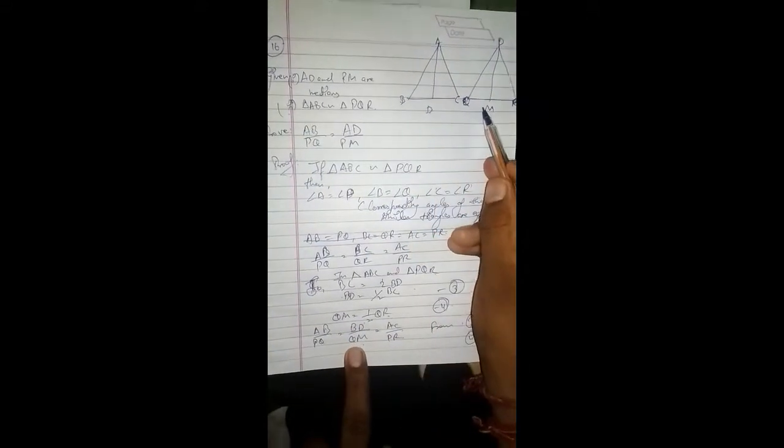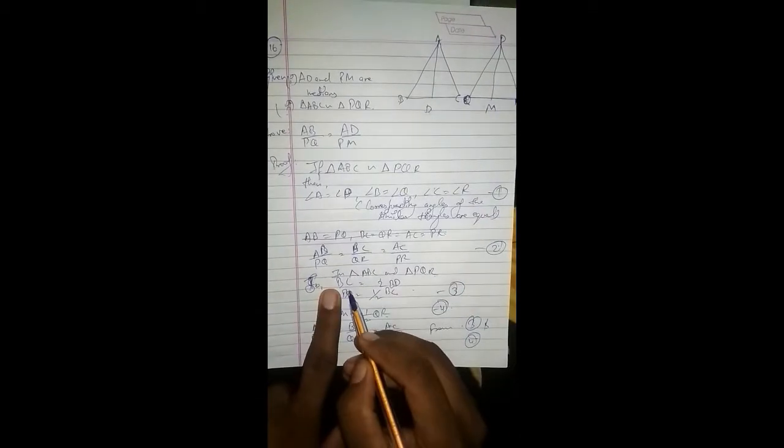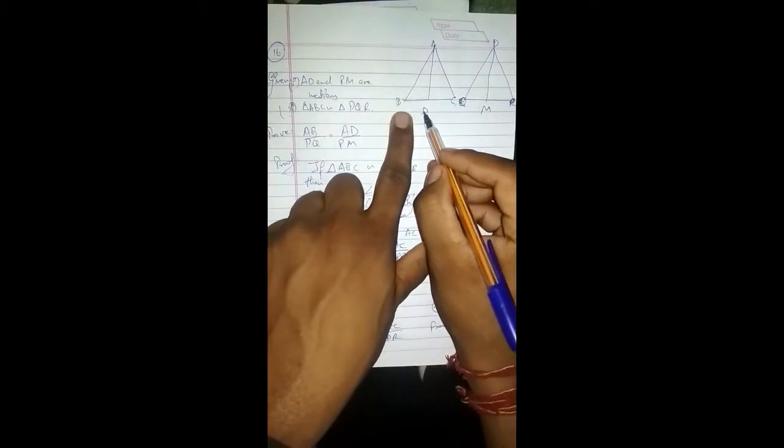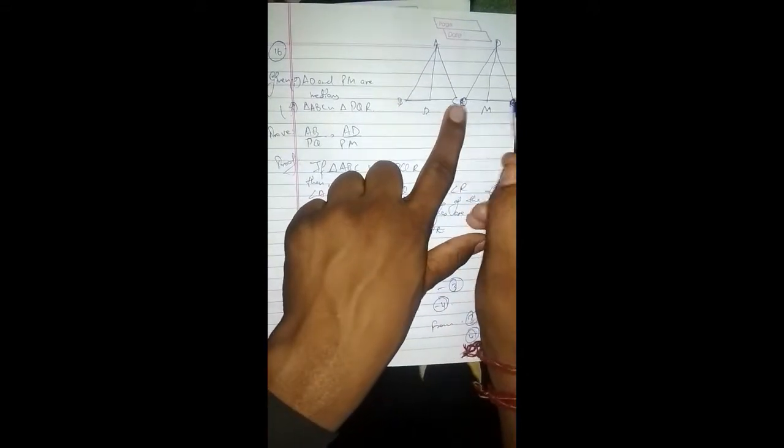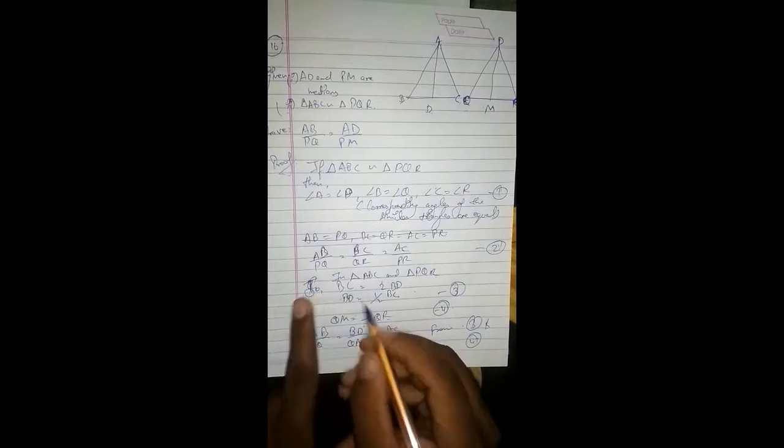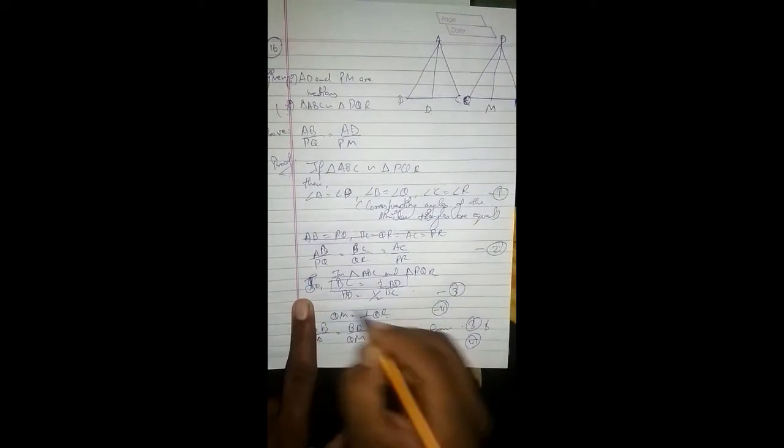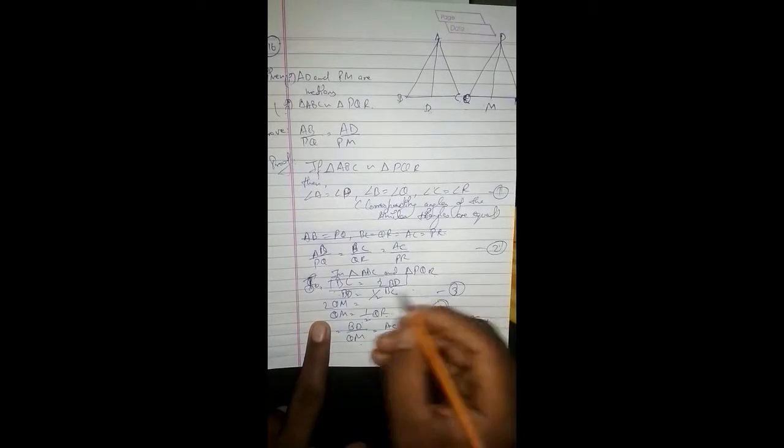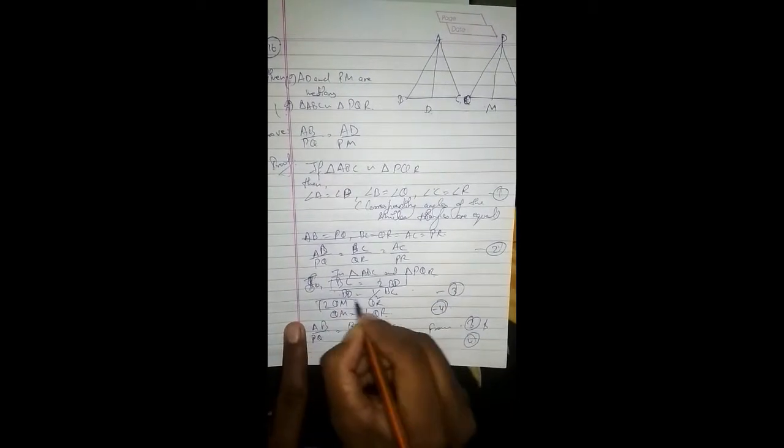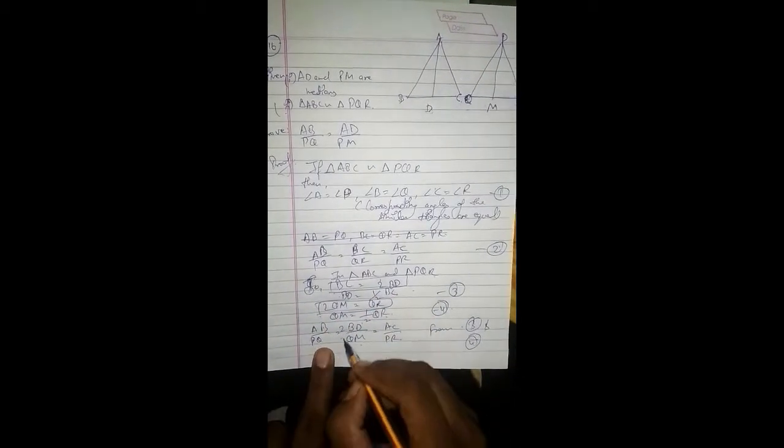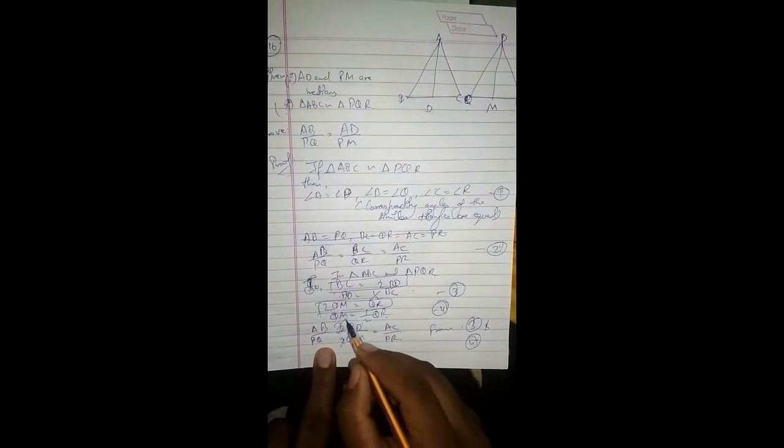BD upon QM, because BC here, in the same way, twice QM is equal to QR. After this, twice cancels out.